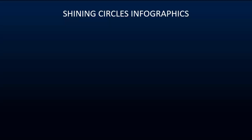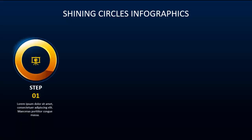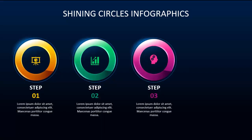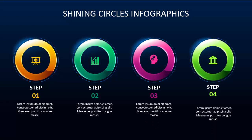In today's tutorial I'm going to show you how to make a four shining circles infographic slide in PowerPoint. When I click, you can see a shiny circle with a light effect, then the icon, step one, and detail text. On the next click it will show step 2 with different colors, step 3, and step 4.